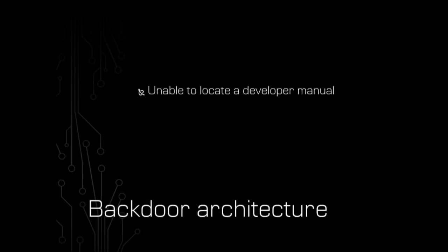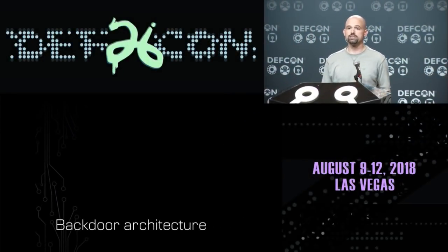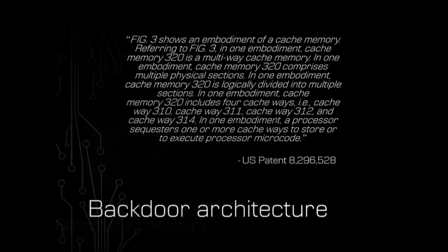I wasn't able to find a developer manual for this processor, so when left in the dark, a good place to go is to follow a trail of patent breadcrumbs. I had to dive through a lot of patent literature. Here's a glimpse of what that's like: one patent reads, 'figure three shows an embodiment of a cache memory. In one embodiment, cache memory 320 is a multi-way cache memory. In one embodiment, cache memory 320 comprises multiple physical sections.'